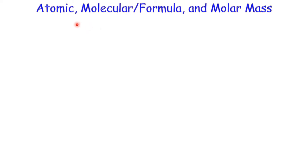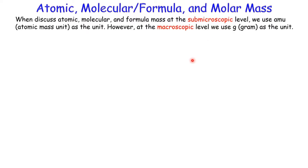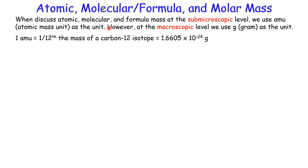Now let's talk about atomic mass, molecular mass, and molar mass. For atomic mass and molecular mass, we use AMU — atomic mass units. However, at the macroscopic level in the laboratory, we use grams, and the related unit is moles. One AMU is 1/12 the mass of a carbon-12 isotope, which equals 1.6605 times 10 to the negative 24 grams — a very, very small mass. That's why we use grams instead of AMU in the chemistry lab.